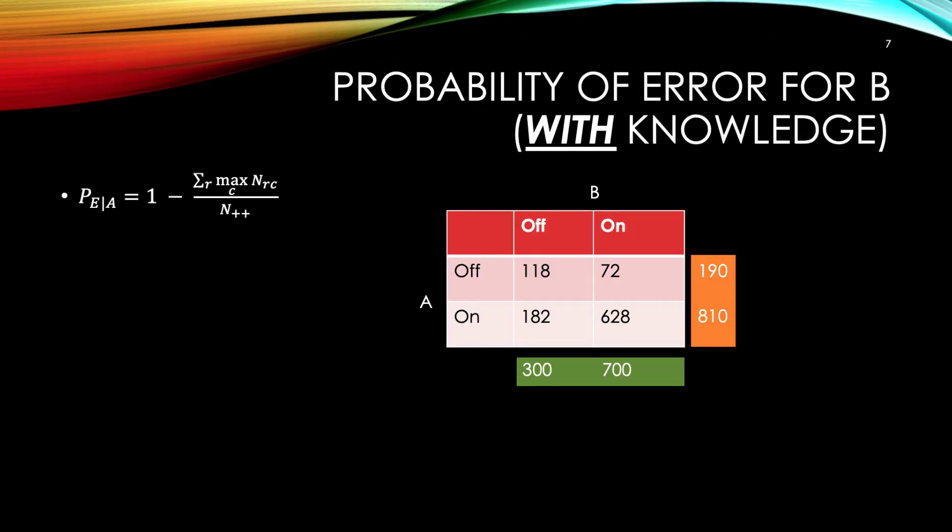P of E given A is nearly identical to P of E. The numerator in the fraction part is the only difference. What is the numerator telling us to do? The expression in the numerator says to go through each row and find the largest value in the column, then take all those largest values per row and add them together. That becomes the numerator. Conceptually, when we go through each row, we are using information about A to predict B. Let's look at the first row when A is off. In this row, B is off 118 times and on 72 times. So when A is off, we should always predict B to be off.